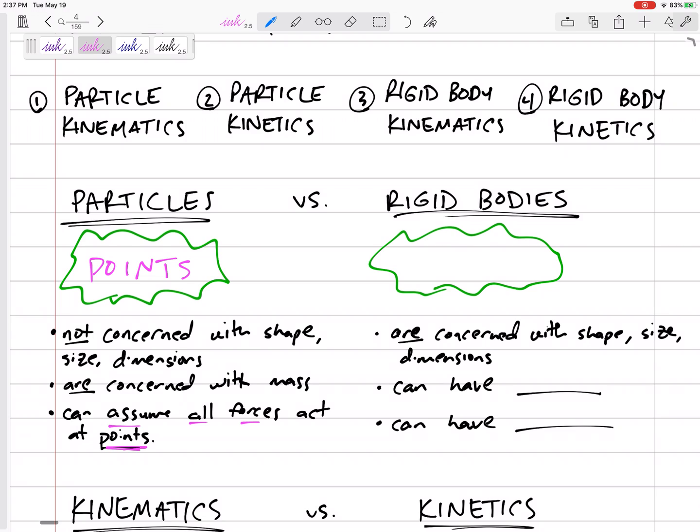As opposed to the second half of the class where we look at rigid bodies. Rigid bodies are more like objects - a big box, a car. We are concerned with where the force is acting, because if forces are not acting through the middle of the object, that can lead to moments.